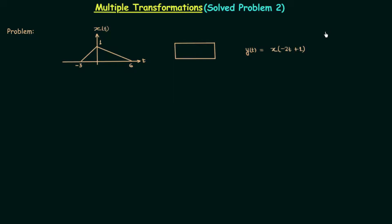In the previous lecture, which was the first problem on multiple transformations, we followed the priority order to obtain the multiple transformed signal. But in the second problem, which you can see on your screen, we will not follow the priority order. There are three different methods by which you can obtain the multiple transformed signal: method 1 uses the shortcut to get the transformed waveform in one step; method 2 performs scaling first then shifting; and method 3 performs shifting first then scaling.